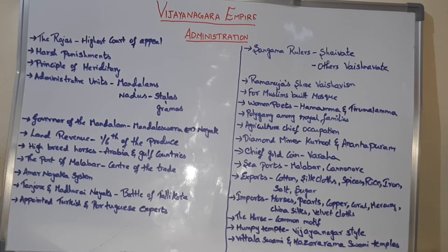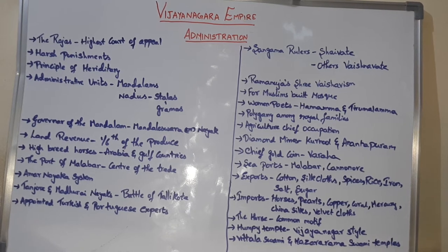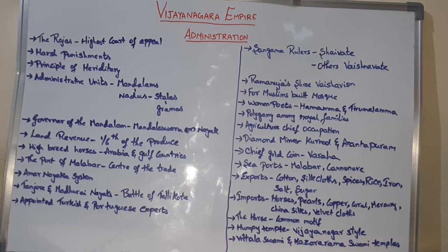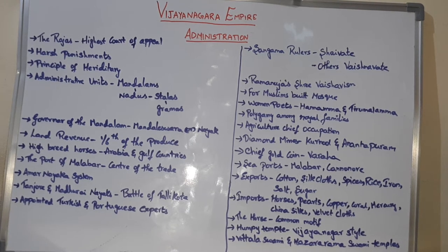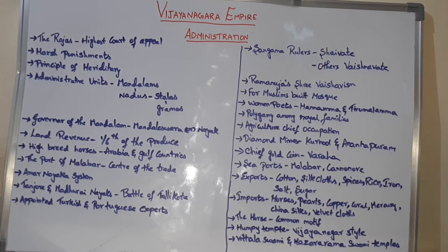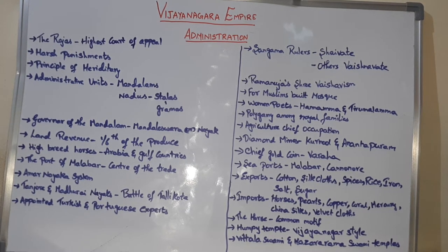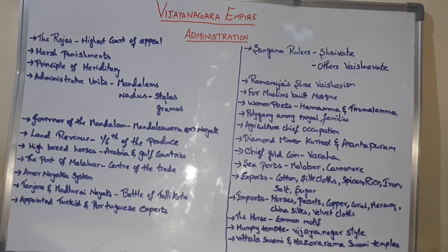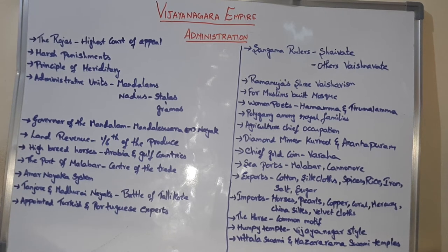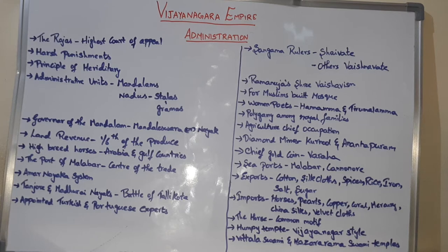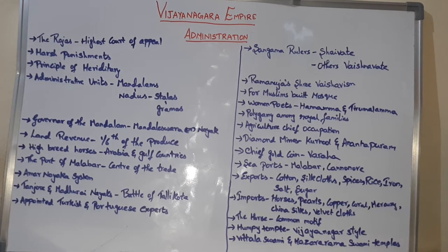Coming to the army and military organization: the disputes between the Vijayanagara and Bahamani were over Raichur Doab — the region between the rivers Krishna and Tungabhadra — and also over the fertile areas of the Krishna and Godavari Delta. For these fertile areas, the Bahamani kings and Vijayanagara kings always had many disputes and fought many wars.